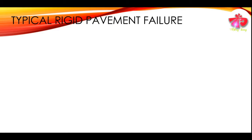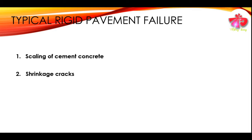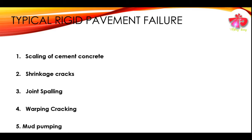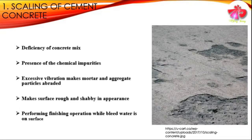These two causes — structural inadequacy of the pavement system and deficiency of the pavement materials — result in certain typical rigid pavement failures, which are: first, scaling of the cement concrete; second, shrinkage cracks; third, joint spalling; fourth, warping cracking; and fifth, mud pumping, also known as pumping.